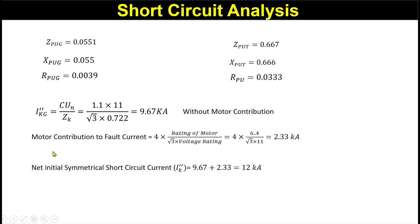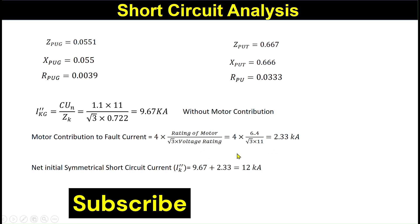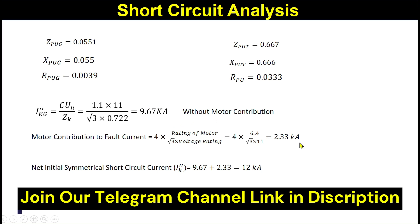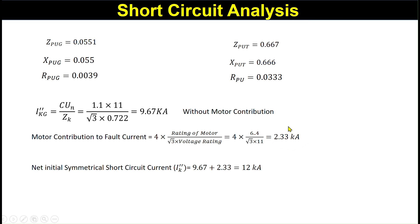Without motor contribution, the motor contribution to fault current can be considered as four times the rated current of the motor — that is, rating of the motor divided by root 3 times the voltage rating. With a motor load of 6.4 MVA (80% of 8 MVA) at 11 kV, this becomes 2.33 kilo-amperes. The net initial symmetrical short circuit current is the sum of the current without motor contribution and the motor contribution, giving a total in kilo-amperes.